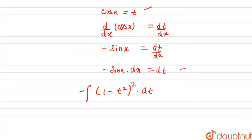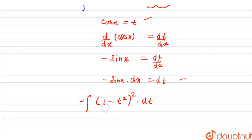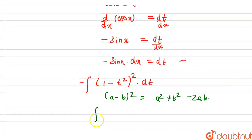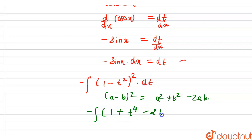After substitution we have the integral of 1 minus t square to whole square times minus dt. We expand 1 minus t square using the formula (a minus b) whole square equals a square plus b square minus 2ab. After applying this formula, the integral becomes minus the integral of 1 plus t raised to power 4 minus 2t square.